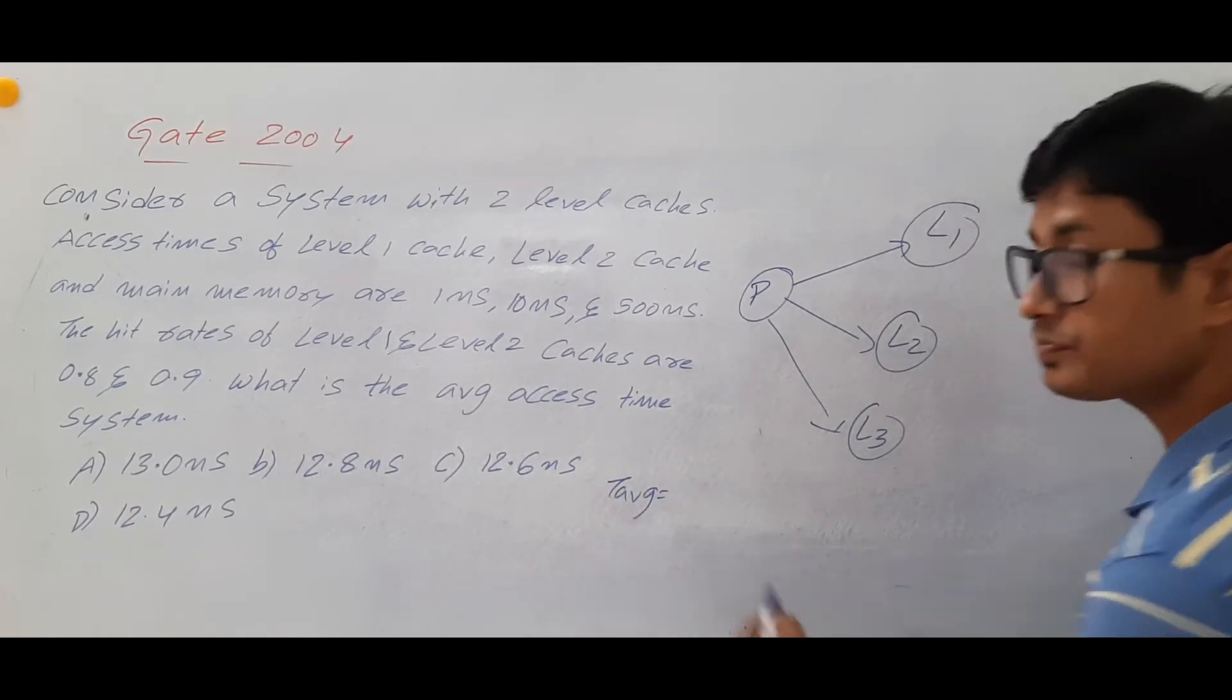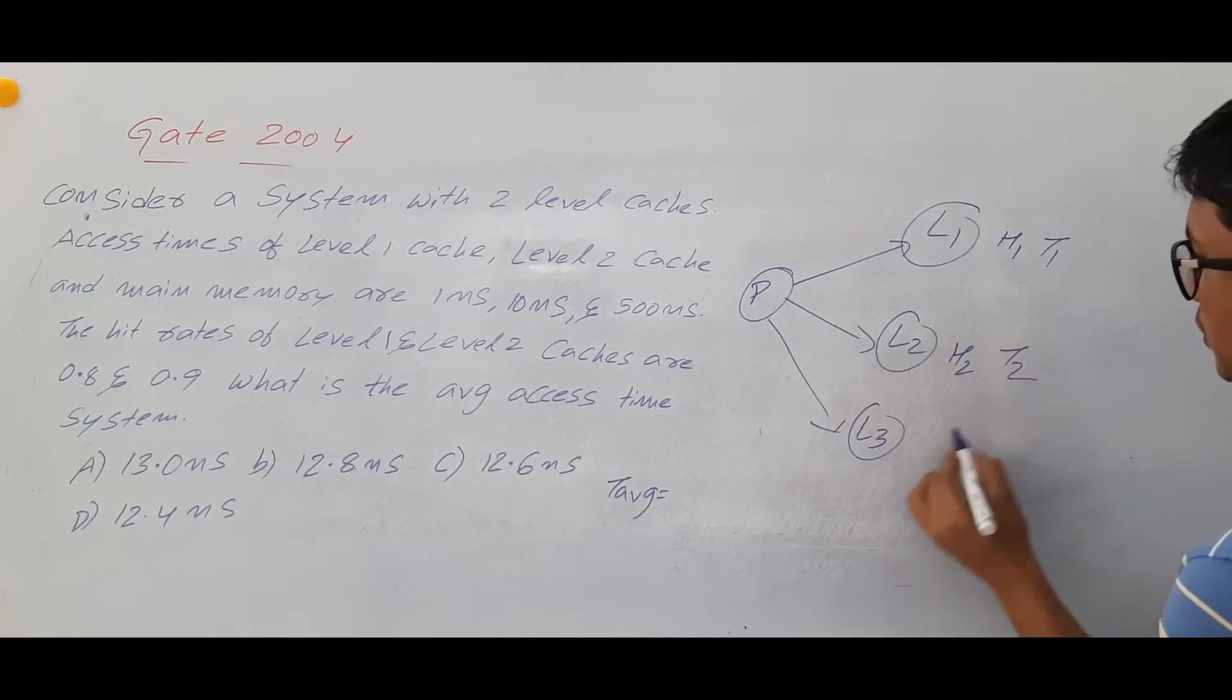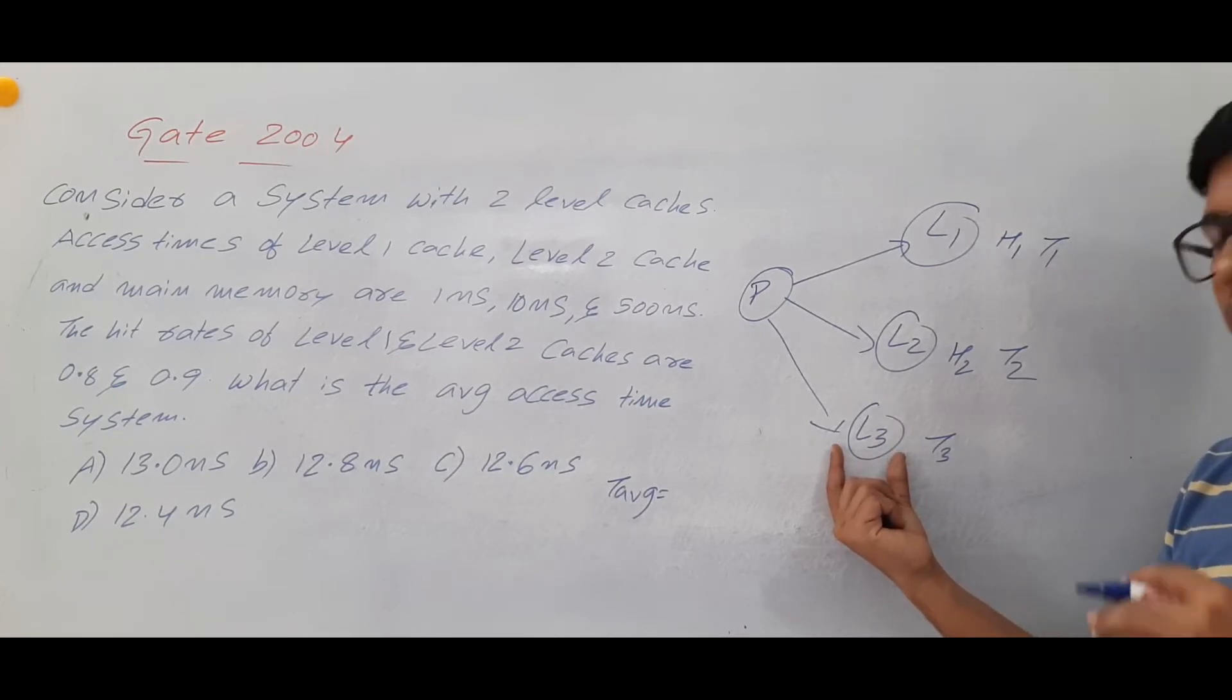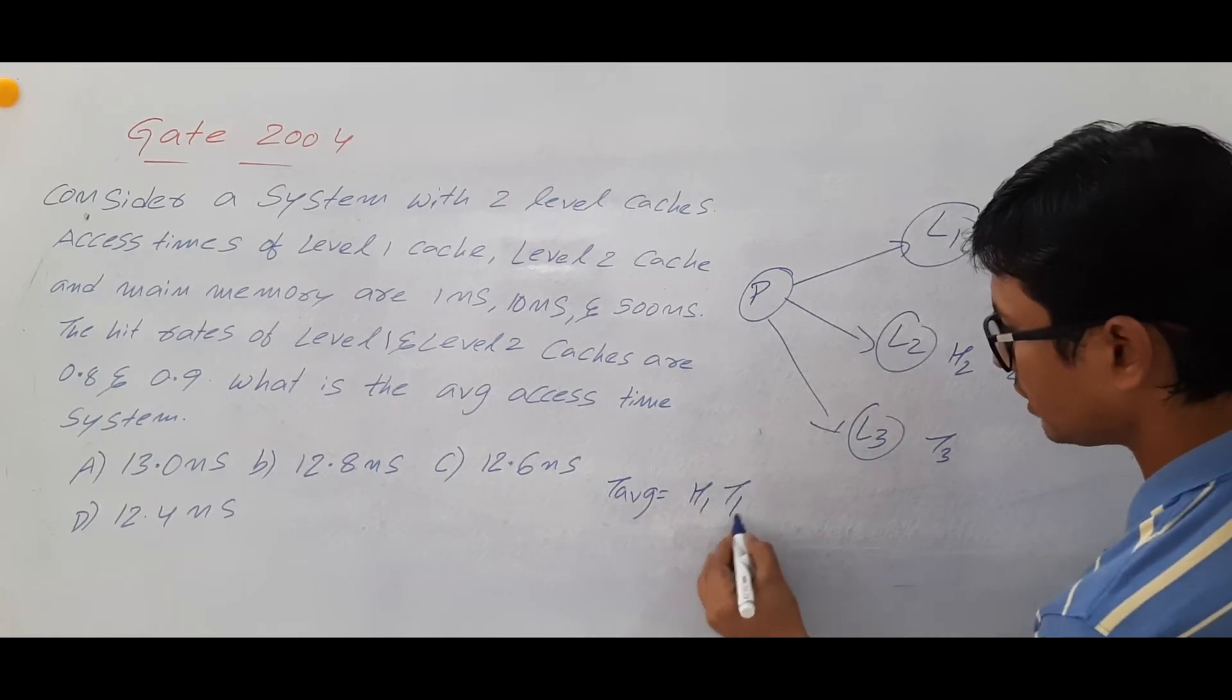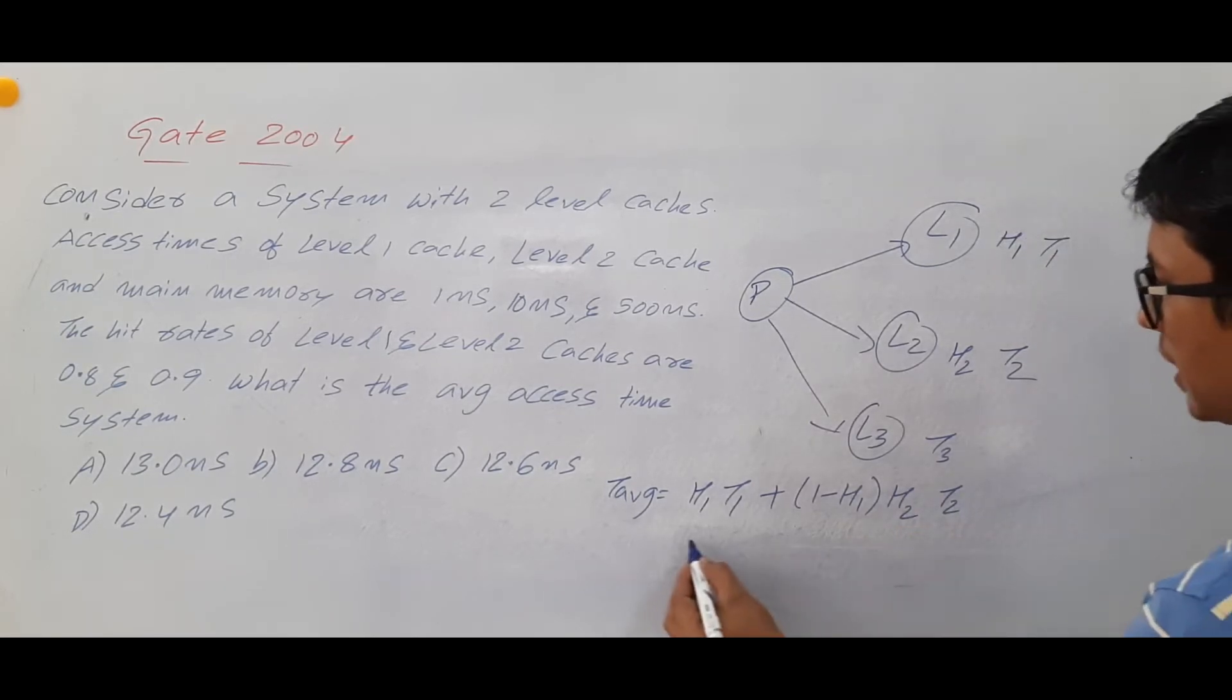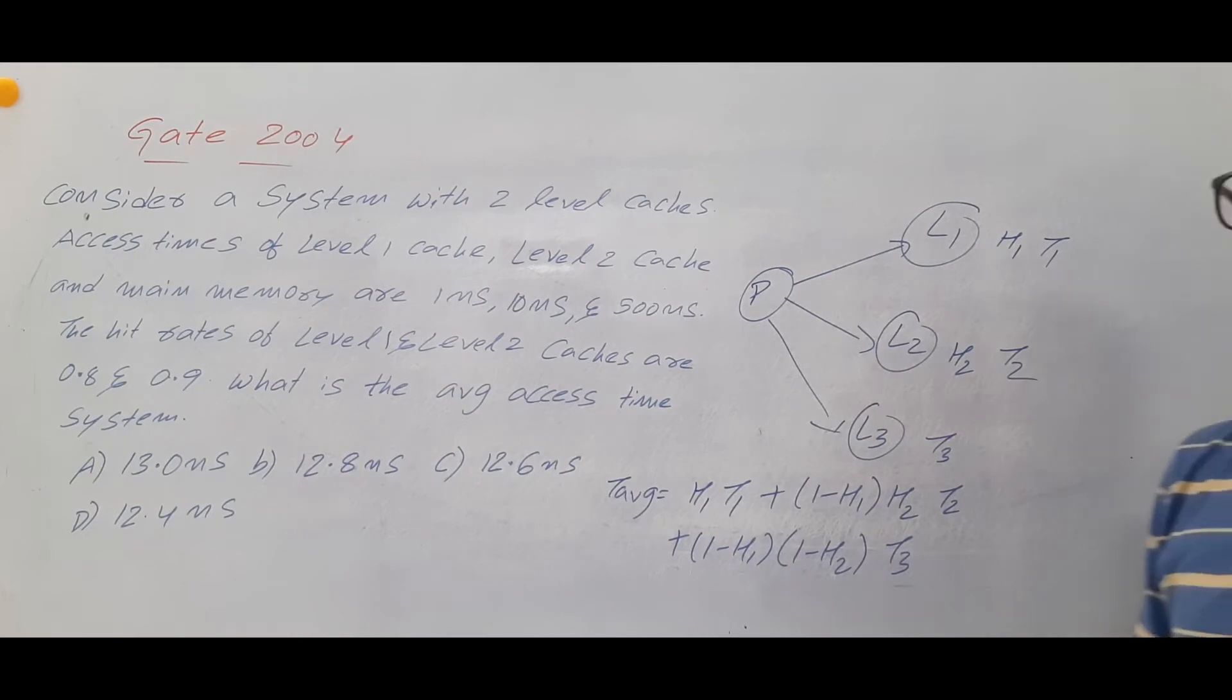So then what is the average access time? T average is equal to, if hit ratio of this one is H1 T1, hit ratio of this one is H2 T2 and T3 is the time access for this one. And I said that this will be available means the information you are searching will be available in level 3. So the hit ratio of level 3 is 1. So H1 into T1 plus 1 minus H1 into H2 into T2 plus 1 minus H1 into 1 minus H2 into T3. That is what we have discussed.